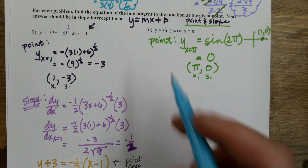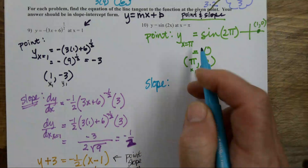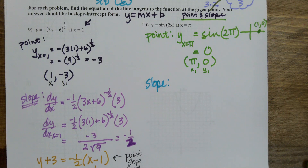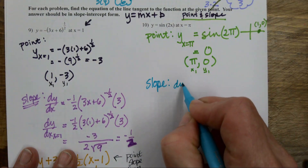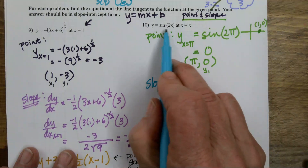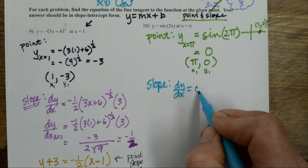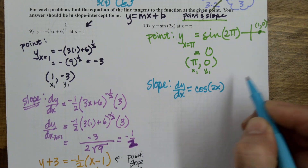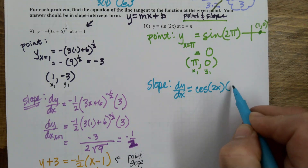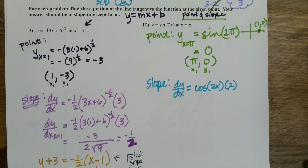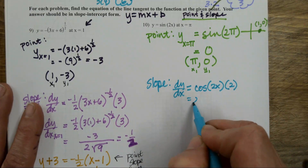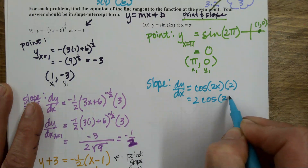Let's find the slope. When I think slope, I think derivative. dy/dx equals — chain rule, because it's a trig function. My outer function is the sine, my inner function is 2x, the angle. Derivative of the outer: derivative of sine is cosine. Leave the 2x alone, then multiply by the derivative of 2x, which is 2. So this is 2 times the cosine of 2x.